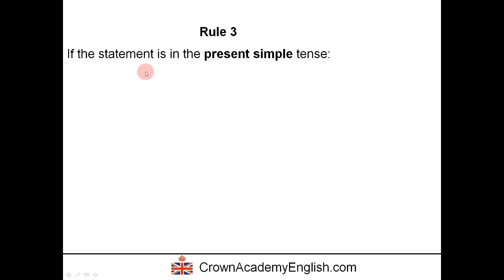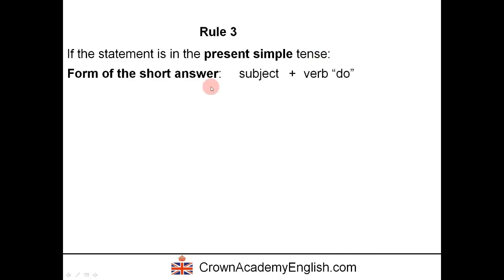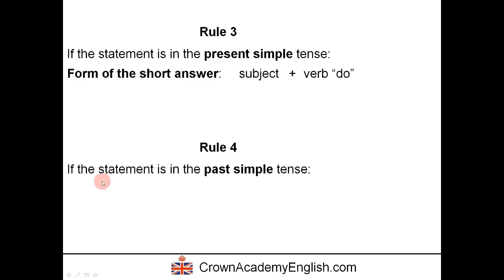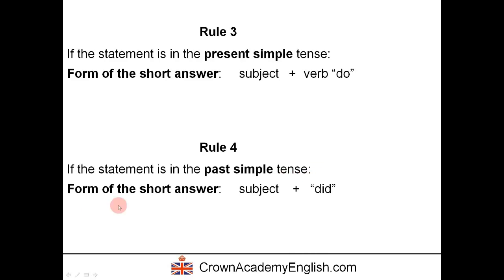Rule three: if the statement is in the present simple tense — but not including the verb be or have — then the form of the short answer is subject followed by the verb do in the correct form. Finally, rule four: if the statement is in the past simple tense — and it is not the verb be or have — then the form of the short answer is subject followed by did, which is the past form of do.